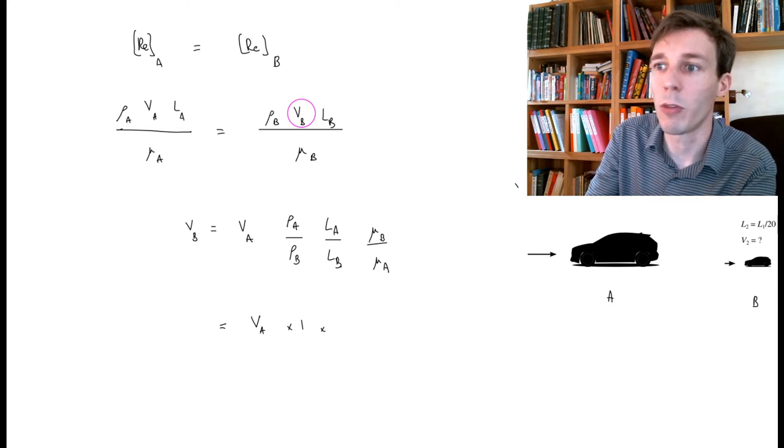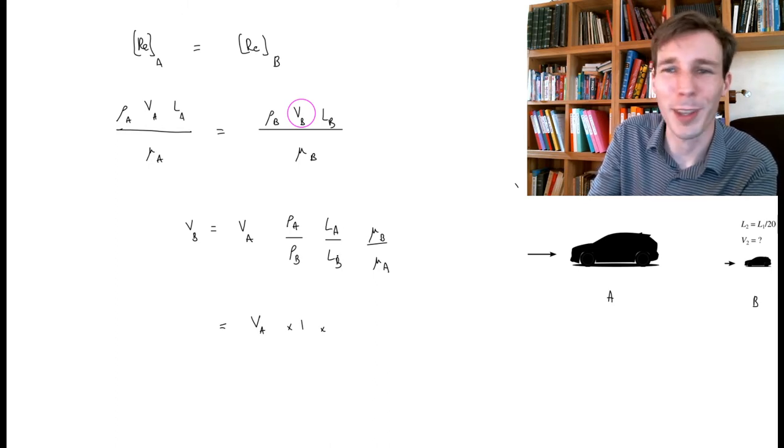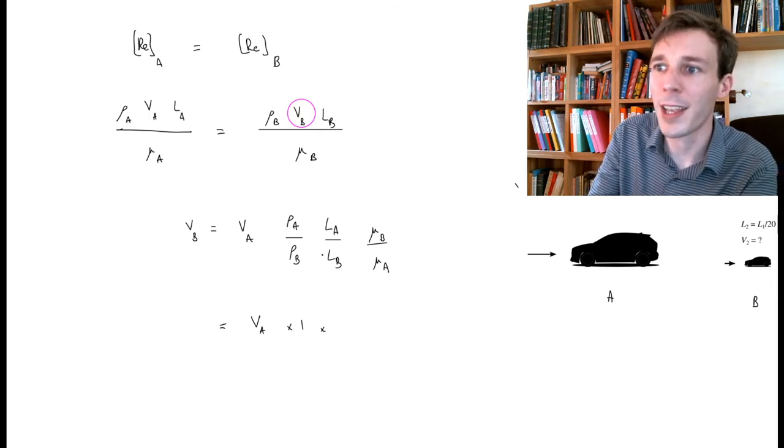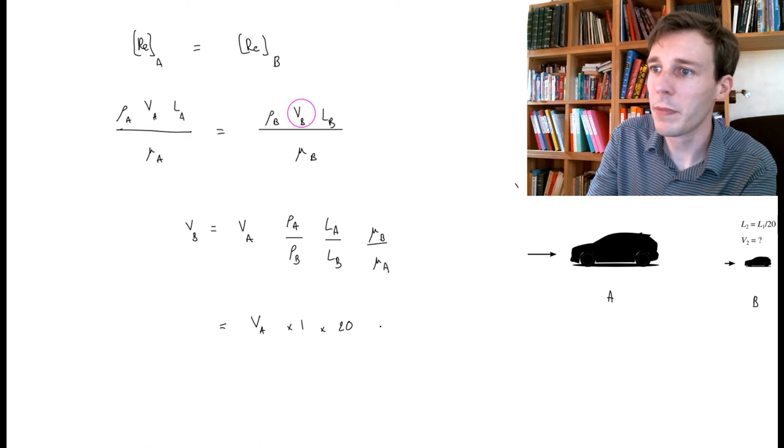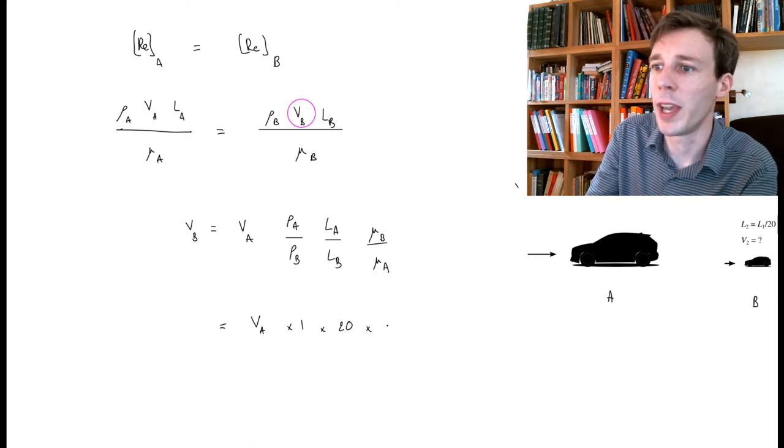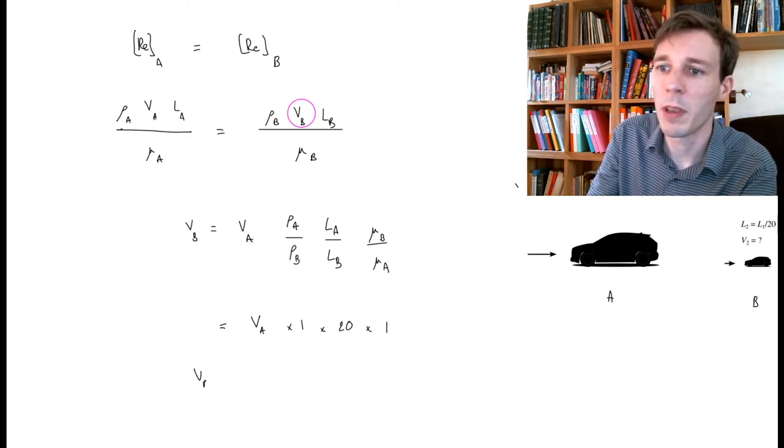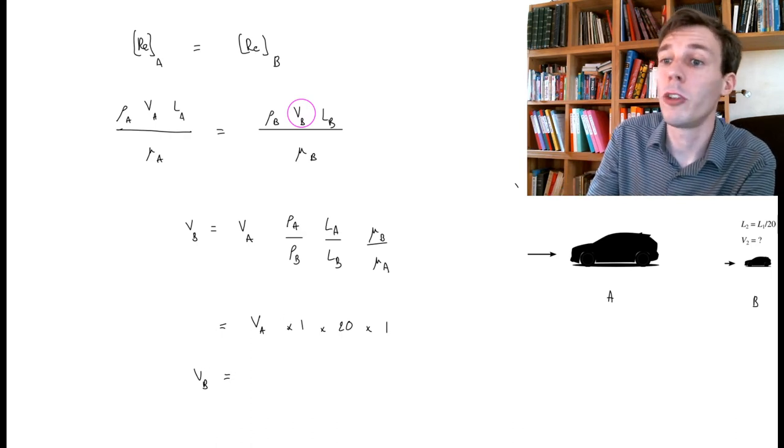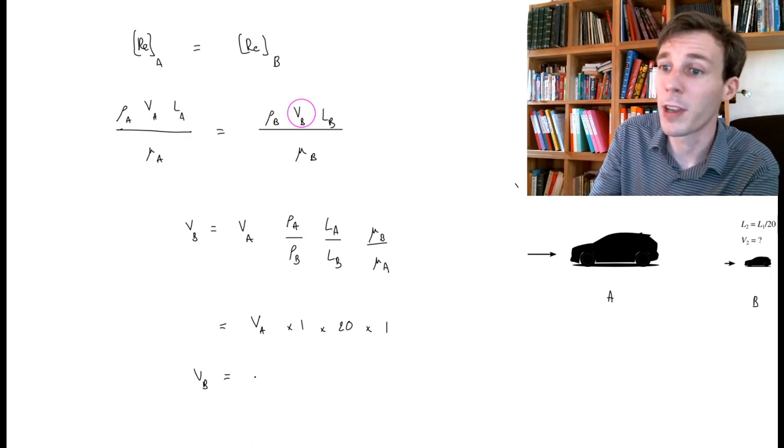ρA over ρB is going to be 1. And L_A over L_B, this is where the labeling is useful. L_A is the length of the car, L_B is the length of the model, so L_A over L_B is 20. And then μB over μA, that's 1. And so we have VB, the velocity that we need around the tiny car to be able to simulate the flow around the real car, is 20 times VA.